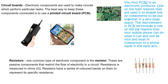Next up is circuit boards. Circuit boards — the green board you can see in the picture — are used to make circuits which perform particular tasks. The best way to keep components connected is to use a PCB, also known as a printed circuit board. What you have on the PCB are tracks — the lighter green areas — which are effectively small pieces of wire that transfer electricity or signals between different components. PCBs are found in all different electronic products, one of the main reasons being that they allow lots of components to be packed into a very small space. That improvement in PCB technology is one of the big reasons your mobile phone can do what it does today.